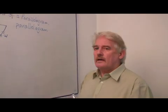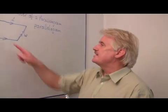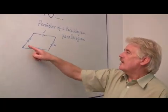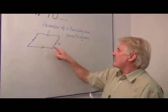Now the perimeter, what we mean by perimeter, is the distance around the edge. So it's the length of these four sides added together.